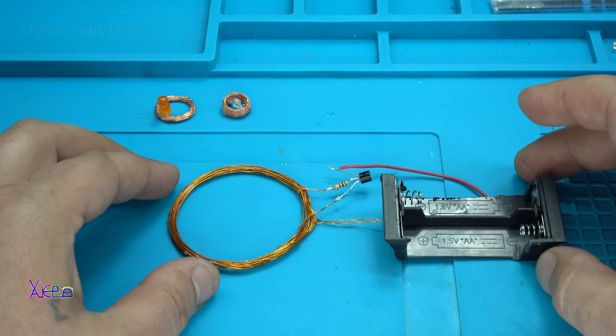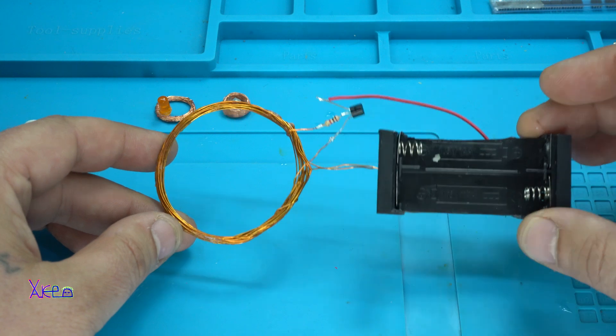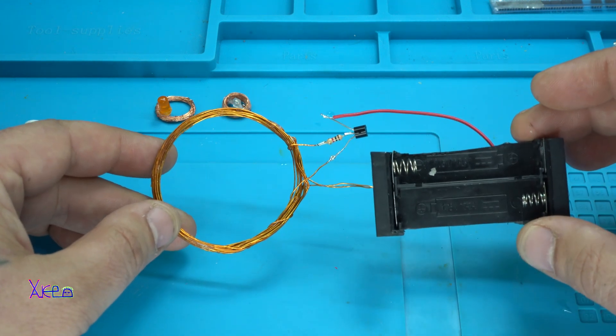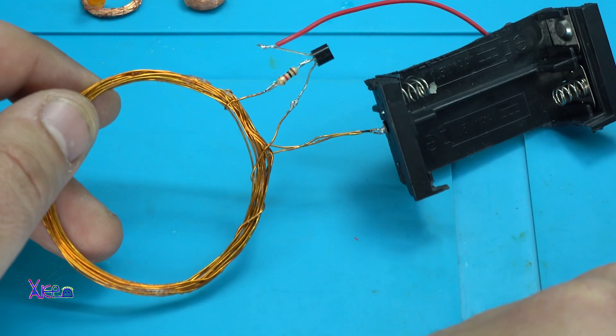Here it is the project for today's video and it's a wireless energy transmitter. Very simple circuit made out of one resistor, one kiloohm, one transistor.